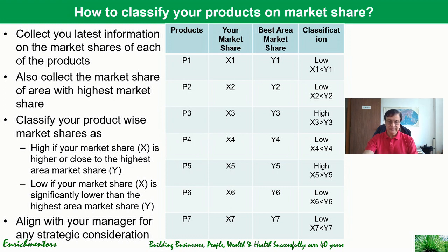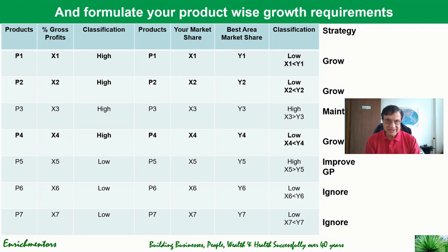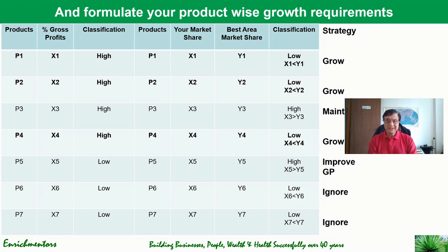Having done both classifications, put the combined analysis in one sheet: list products P1 to P7 with their gross profit classification and market share classification side by side. This gives you a product-wise strategy. For example, P1 — high gross profit, low market share — becomes a 'grow aggressively' product. P2 similarly is high gross profit and low market share, so it is also 'grow.' P3 is high gross profit but already high market share, so the strategy is to maintain current growth.